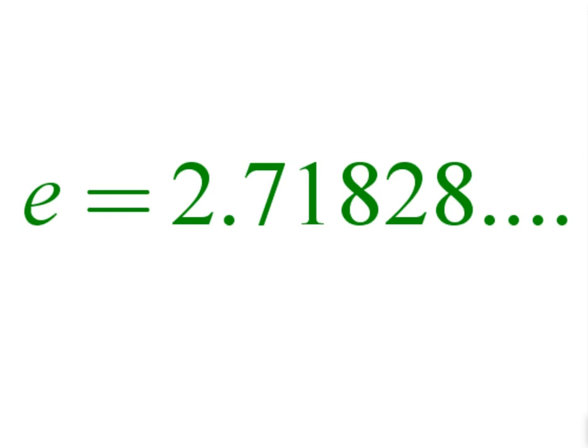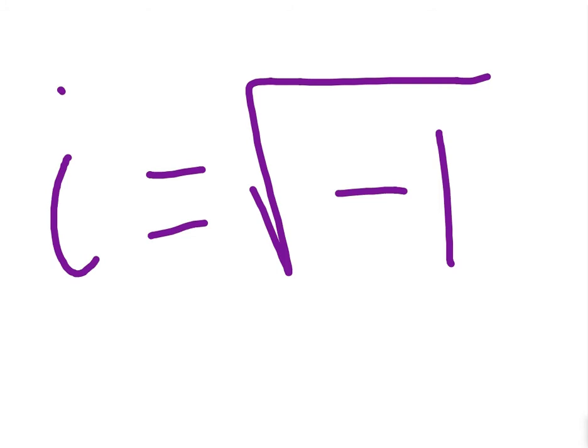Another number we want to look at is e, and that's kind of hard to explain in a sentence, but it's actually a never-ending decimal as well, and it's 2.71828 and it goes on and on. I, i is equal to the square root of negative 1. That's an imaginary number, but it's still a number.